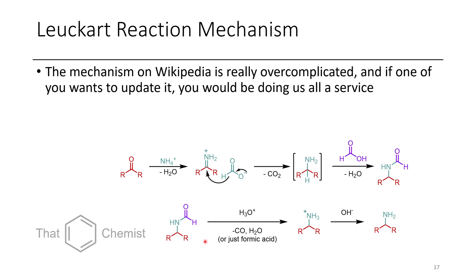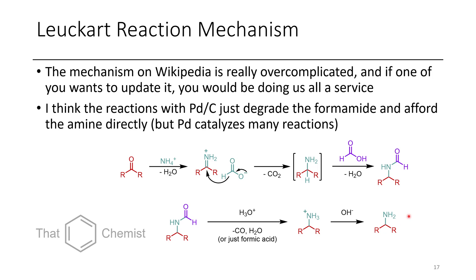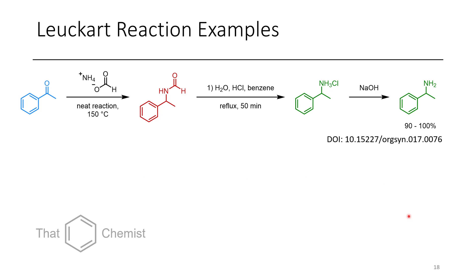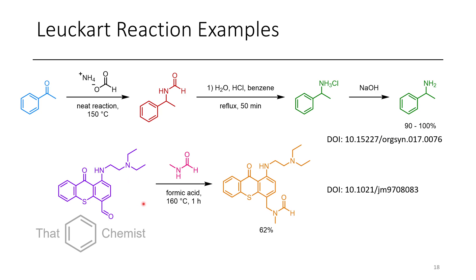The second step is hydrolysis of the formamide: the formamide is converted to an ammonium salt, which is then deprotonated to yield the free base. As stated, palladium on carbon likely degrades the formamide to the amine directly. A good example from OrgSyn — which is a reliable source for procedures — shows the conversion of acetophenone into phenylethylamine. In another case, N-methylformamide is used instead of formamide, so the methyl group is retained on the product; they subsequently deformylate, but if you stop at that step you'll just get the formamide product.